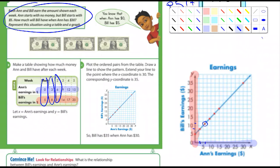And so you can see it's linear. In other words, it doesn't curve at all. Come 7th grade, you guys will be doing graphs where the lines change, where they're not straight. Right now this is linear and pretty simple graphs. So it says, plot the ordered pairs from the table. Draw a line to show the pattern. Extend your line to the point where the X coordinate is 30 and the corresponding Y coordinate is 35. So here's 30, and the corresponding Y coordinate is 35. So Bill has $35 when Ann has $30. Remember, the first coordinate is always X, and the second coordinate is always Y.